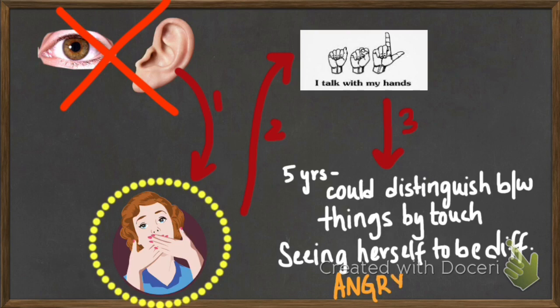She could fold away her clothes and also identify which were hers. Seeing herself to be different, she sometimes became angry and agitated.